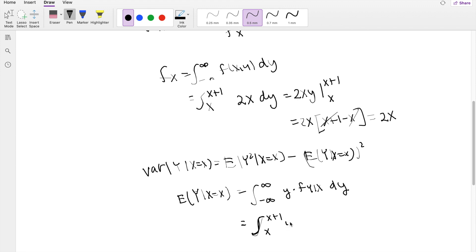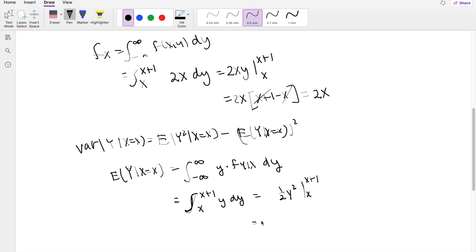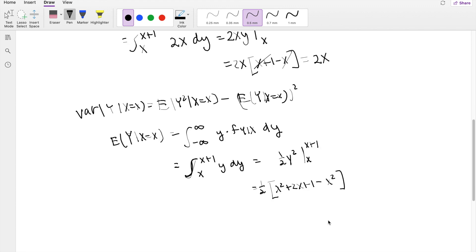which equals Y² over 2, integrating from X to X plus 1. Then this is equal to one half. When I factor this out, you get X² plus 2X plus 1 minus X², the lower limit is X². Okay, so then X² actually just cancels out, and you're left with X plus one half.